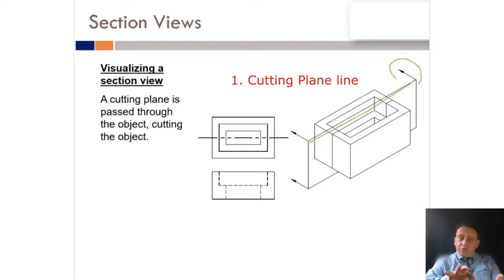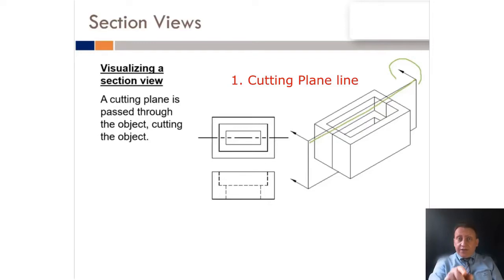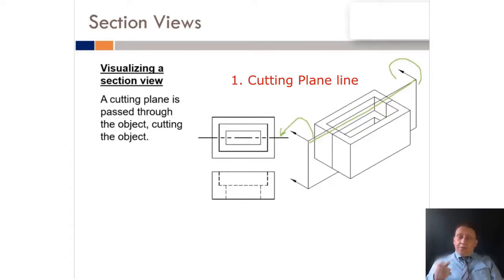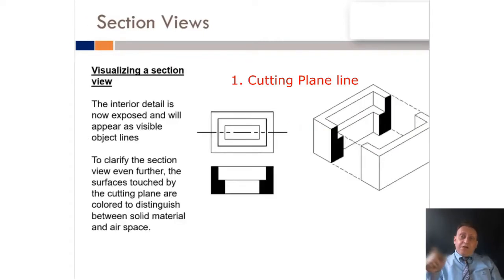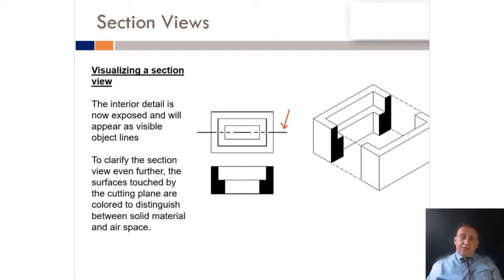Because you are going to remove one part when you cut the object into two pieces, you keep the other one. After you put the cutting plane line, it is important to add the direction of the arrow, which indicates which part you want to choose. In this case, we will remove the part close to us, because the direction of the arrow is indicating to the other direction — meaning I need to use that part to look inside.